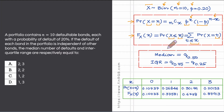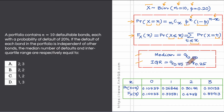Let us recall the definitions of the median and the interquartile range. The median refers to the 0.5 quantile — the quantile associated with a probability of 0.5 — and the interquartile range refers to the difference between the 0.75 quantile and the 0.25 quantile. To work out these, we need to compute the CDF of X.